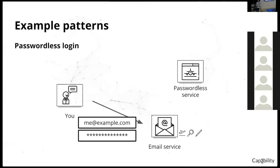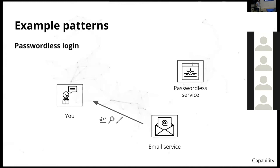What ends up happening is that the passwordless service delegates the burden of authorization — of who you are — to the email service. If you're a startup, you might have better authorization than Gmail does, but you probably don't. So you could delegate the authorization headaches to Gmail or somebody else that deals with it, and hand back the capabilities to log into the service. Once you open a link in an email, you're logged into the passwordless service.